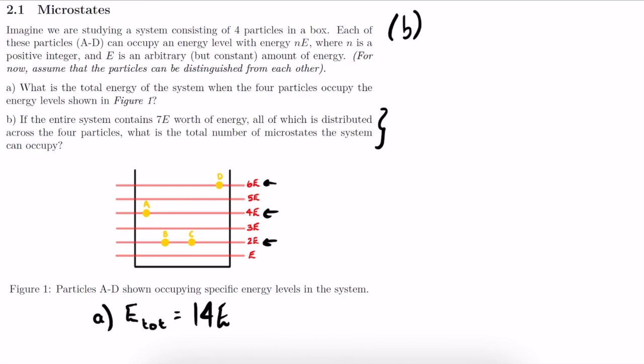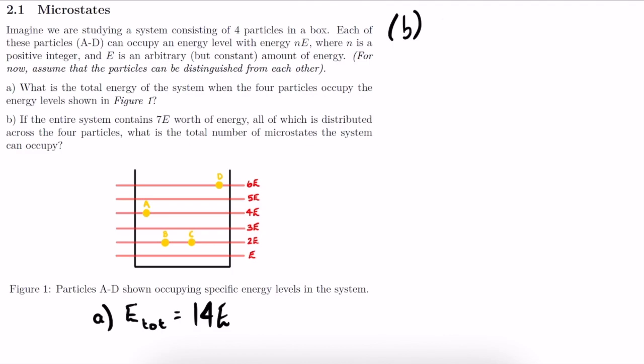Now let's look at part b, which is where things get really interesting. We've been told that our system now has a total energy E_tot of 7e, distributed over four particles. In other words, what we've been asked to find is the total number of ways in which 7e worth of energy can be distributed over four particles. There are ways to make this calculation easier, but in this video I want to go through it step by step, finding as many different combinations as possible whilst working systematically.